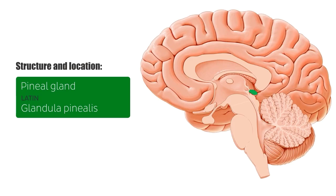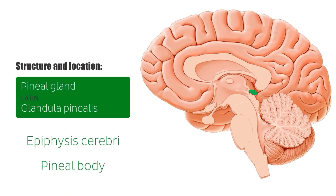The pineal gland, also known as the epiphysis cerebri or pineal body, is a small cone-shaped structure measuring approximately 5 to 8 millimeters long. It is located in the diencephalic part of the forebrain, or prosencephalon, above the quadrigeminal plate. The prosencephalon contains the thalamus and the hypothalamus, amongst other things.